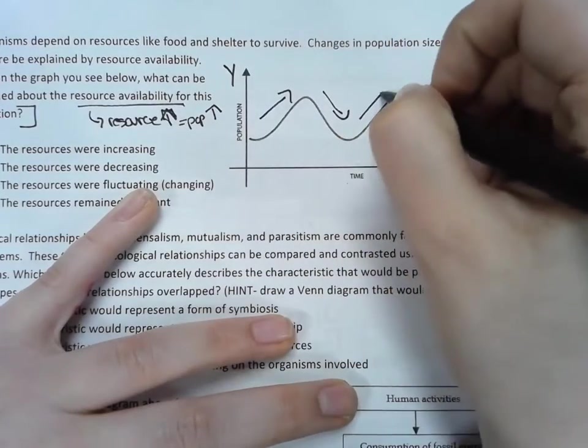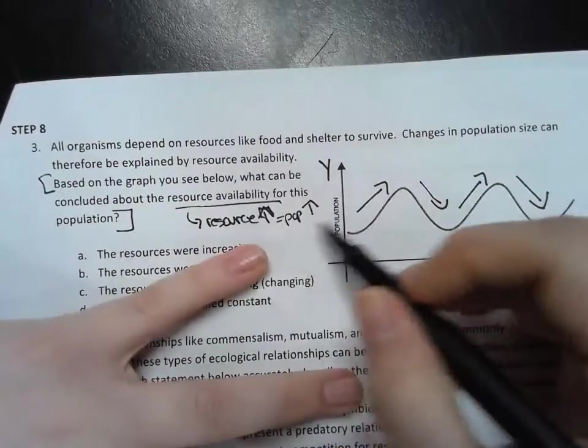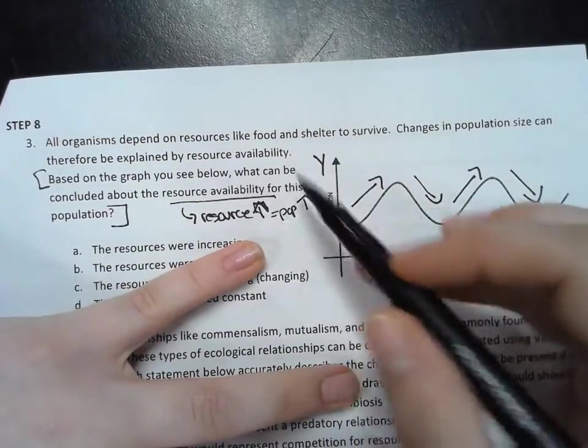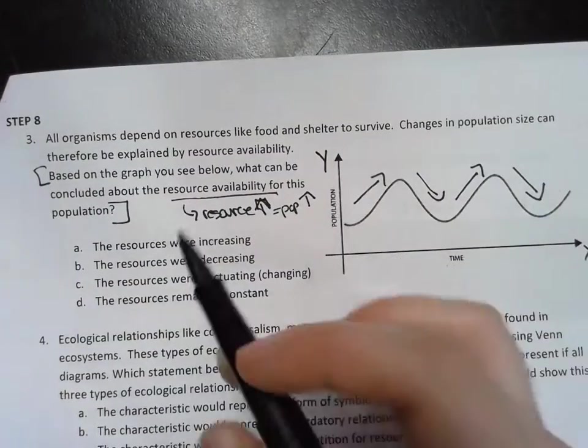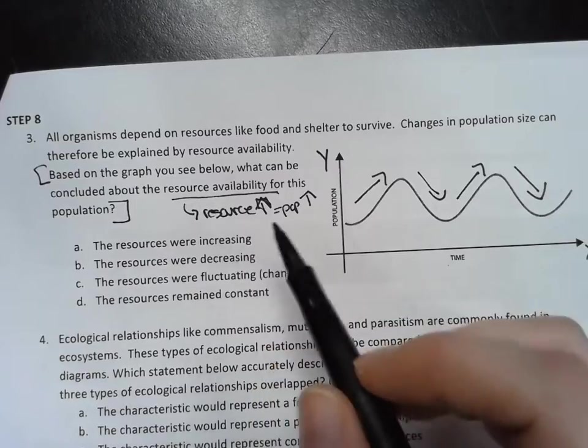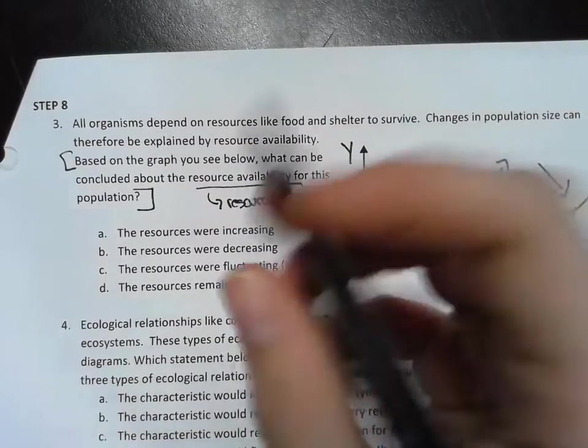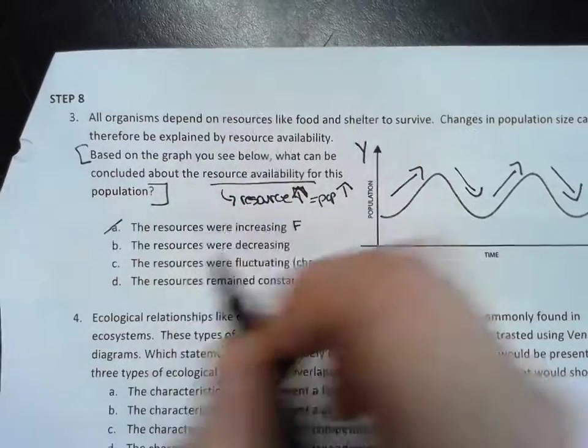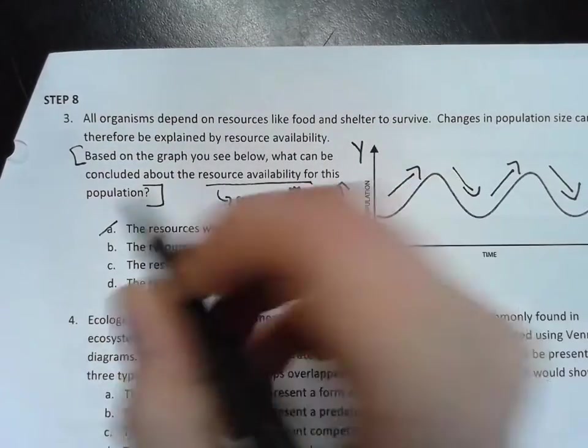Now if I look at my graph, I can see on the x-axis I have time, on the y-axis I have population, and I see that this population is going up and down. So if my population is going up and down, then based on my key point, the resources would be going up and down.